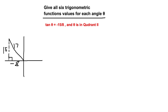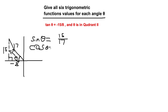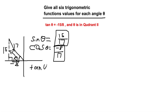After determining all the sides, we find the six trigonometric functions. Sine of theta is opposite over hypotenuse, which is 15 over 17. Cosine of theta is adjacent over hypotenuse, which is negative 8 over 17. Tangent of theta is already given to us: negative 15 over 8.